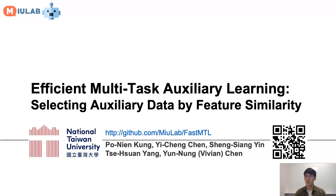Hi everyone. Today we are going to talk about our project, Efficient Multitask Auxiliary Learning: Selecting Auxiliary Data by Feature Similarity. The authors are Gong Bo Nian, Chen Yicheng, Ying Shen Xiang, Yang Zhexuan, and Chen Yunno. We are from National Taiwan University.